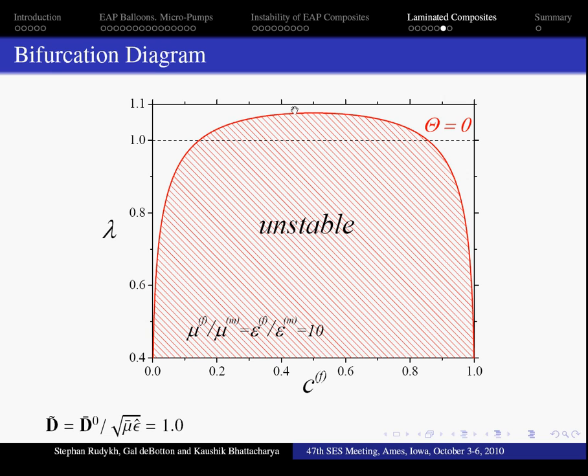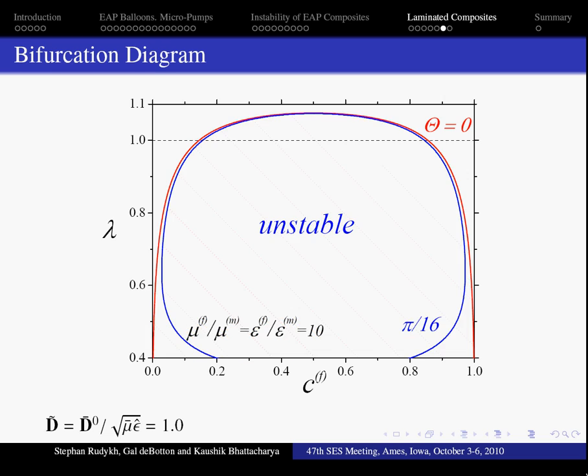Next, let's look at the case when the layers are not aligned with the pre-stretch. We see that the unstable domain is decreased and for volume fraction around 0.2 the composite becomes absolutely stable. A similar behavior we observe with further increase of the lamination angle.